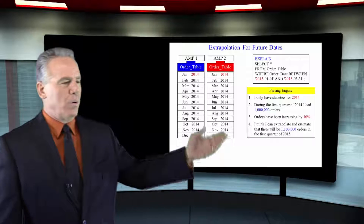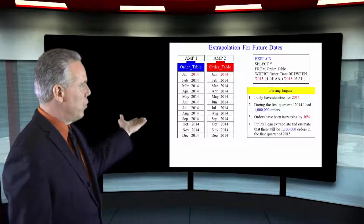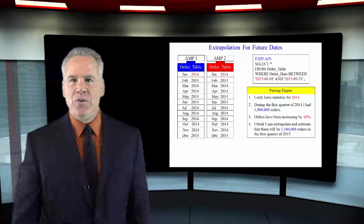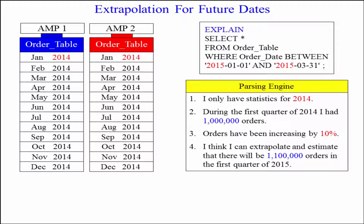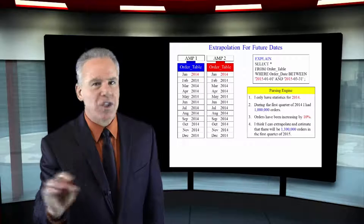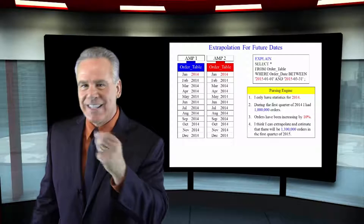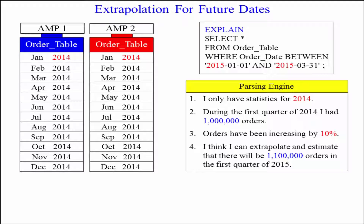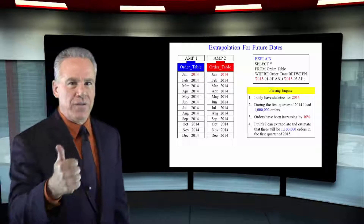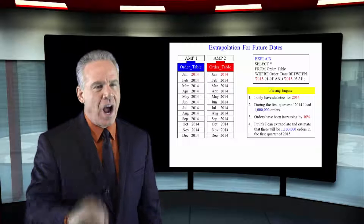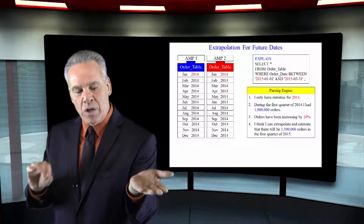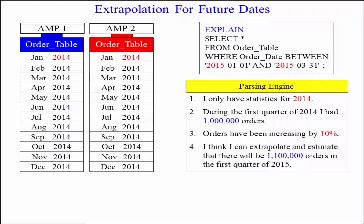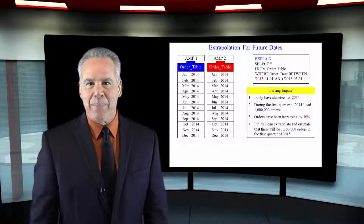Here you can see our query where we're saying select everything from the order table with the order dates between 2015 dates, but our table is actually storing data from 2014. The parsing engine is going to extrapolate and say that in the first three months of 2014, orders were increasing by about 10% — we had a million orders back then. So in 2015, if this trend continues, we're going to have about a million orders plus 100,000 extra ones. That's an example of extrapolation.